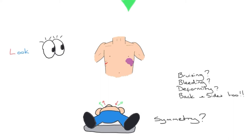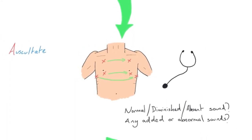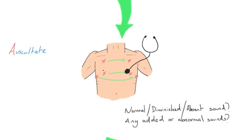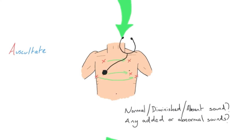After Look, we move on to A for Auscultate. Using our stethoscope, we auscultate at least at these landmarks on the front of the chest, going from one side to the other, comparing the good side to the bad side. We're listening for normal breath sounds and noting if they are diminished or absent — for example, good air entry on one side and poor or absent on the other would lead us to suspect something going on with that side of the chest.